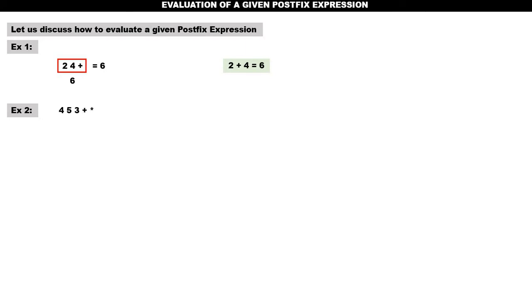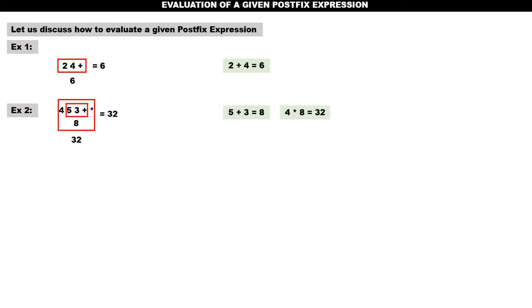Example number two: '4 5 3 + *'. How to evaluate this? From the left, go on scanning the symbols. Whenever you get an operator, look at the previous two operands. Starting from the left, you get plus. Before plus, the two operands are five and three. So it is five plus three, which is eight. Again scan, you get star. The two operands before star are four and eight. So four times eight is 32. Yes, 32 is the answer.